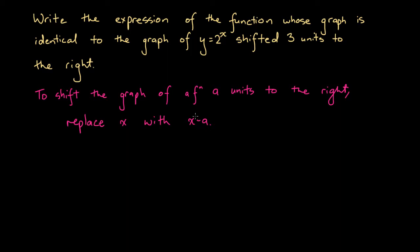And the graph of that new function is identical to the graph of the original function shifted a units to the right. Well, here we're asked to find the graph shifted 3 units to the right. So we're going to replace x with x minus 3.